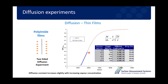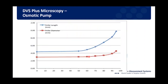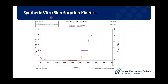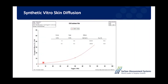DVS can be used with a wide range of geometries looking at not just uptake but also kinetics — how quickly or slowly something goes in and out of a material. For example, using a thin film of synthetic skin called vitro skin, we can make step changes in relative humidity and measure how quickly water goes in and out of those samples with different surface treatments. From this we can get the diffusion coefficient at each step change in relative humidity with different coatings, humectants, oils or creams, to look at skin transport properties as a function of RH.